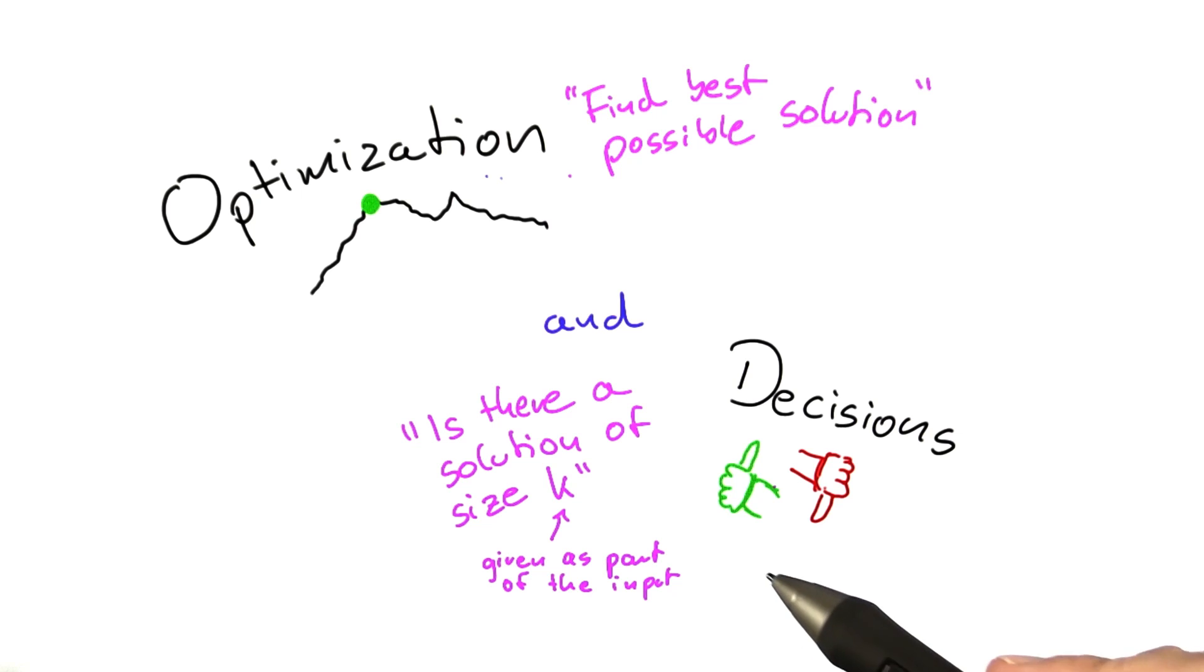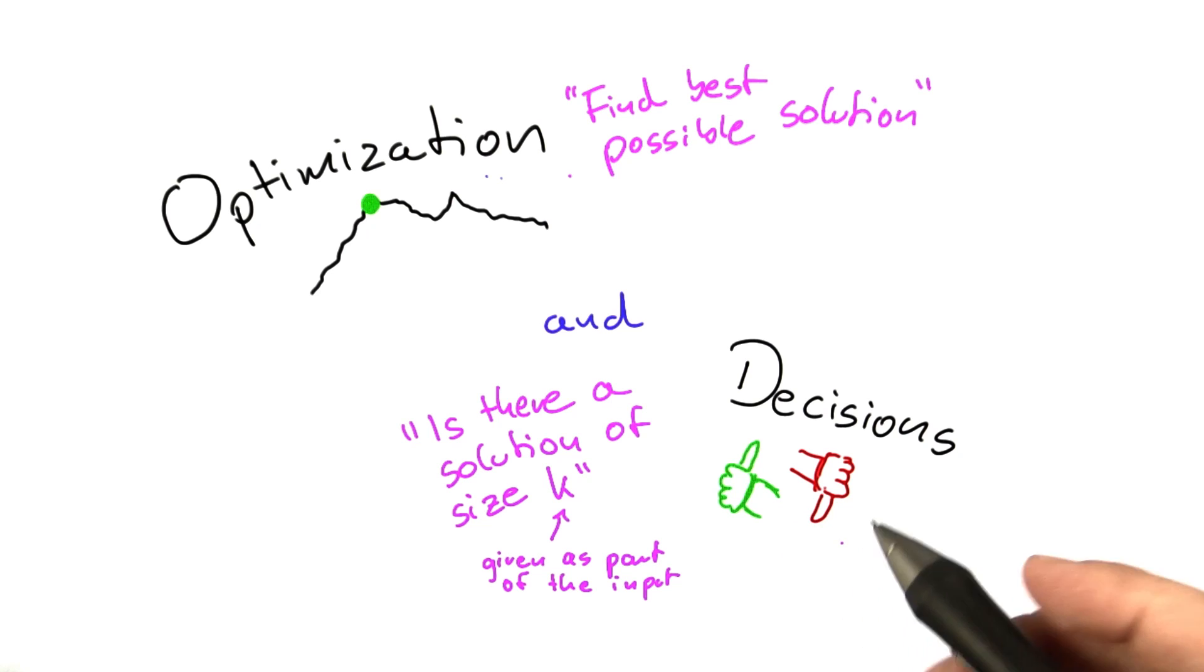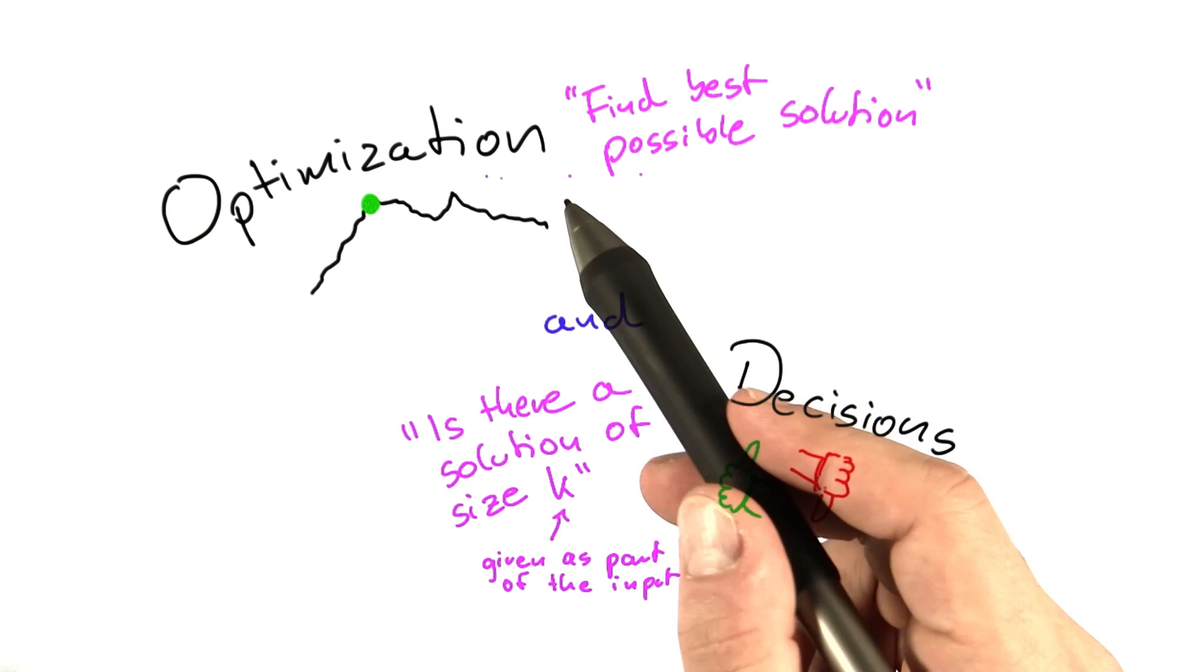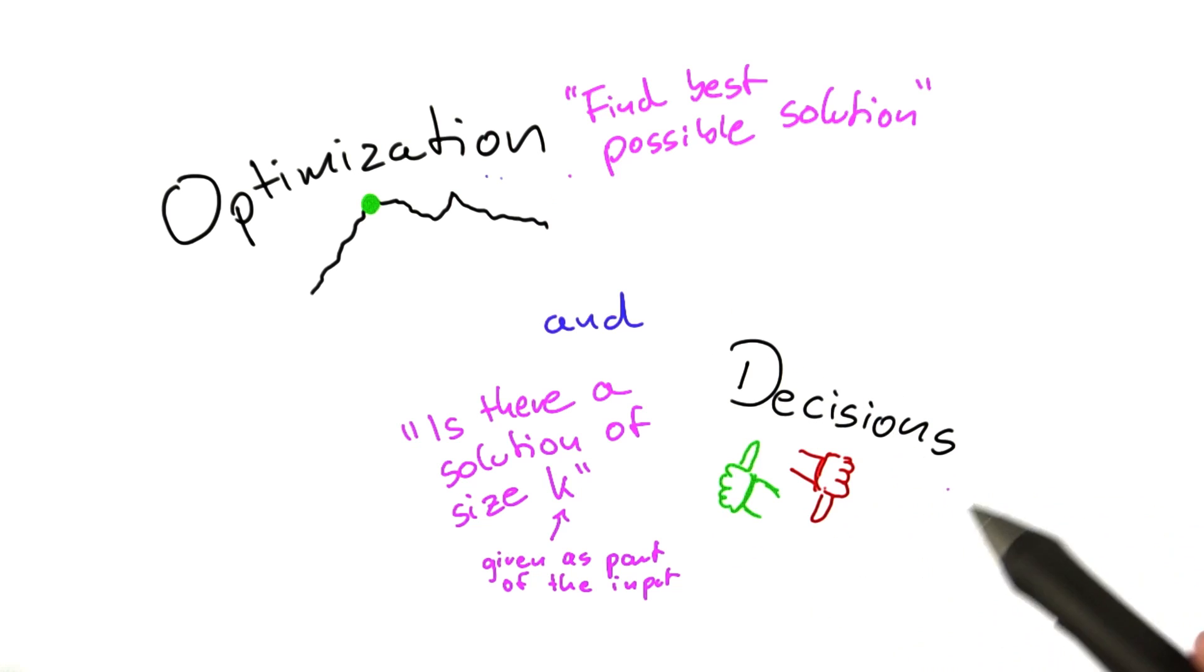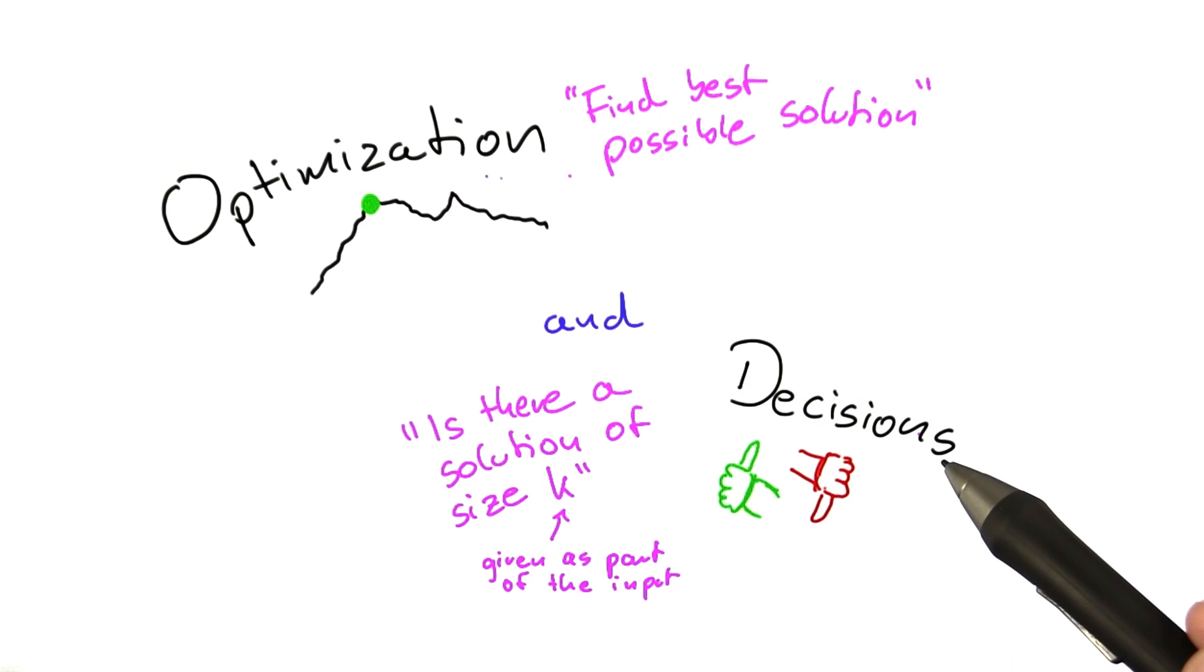And there are two main reasons why we do this. First of all, it makes our lives much easier in some of the proofs that we're going to dive into. And secondly, it's also a little bit more accurate because when you talk about the P versus NP problem, although it's often stated for optimization problems such as those we have so far discussed, the whole theory has actually been developed for decision problems.